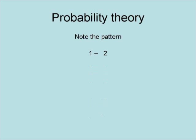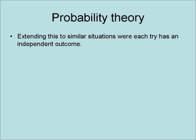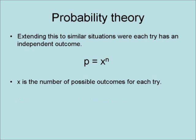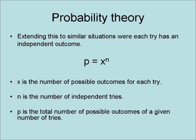Note the pattern: one coin has two possible outcomes, two coins have four possible outcomes, three coins have eight possible outcomes, and four coins have 16 possible outcomes. It turns out that n coins would have 2 to the nth power possible outcomes. Extending this to similar situations where each try has an independent outcome results in p equals x to the nth power, where x is the number of possible outcomes for each try, n is the number of independent tries, and p is the total number of possible outcomes.